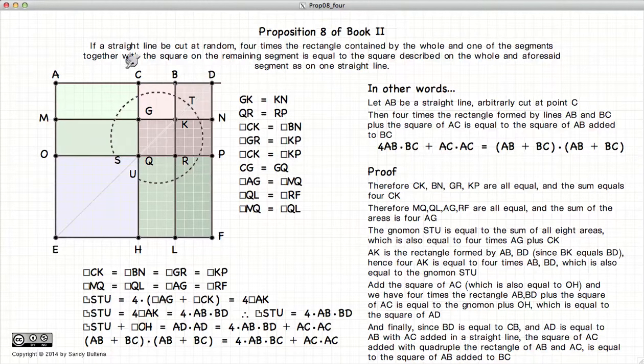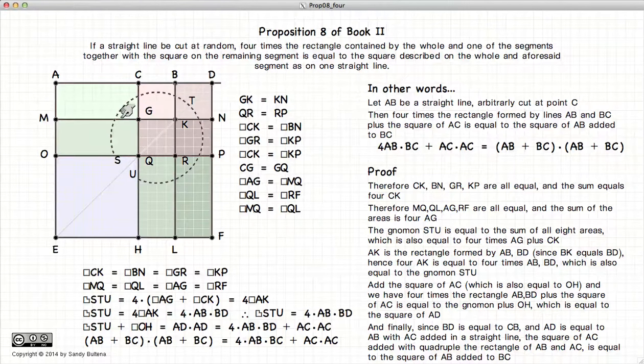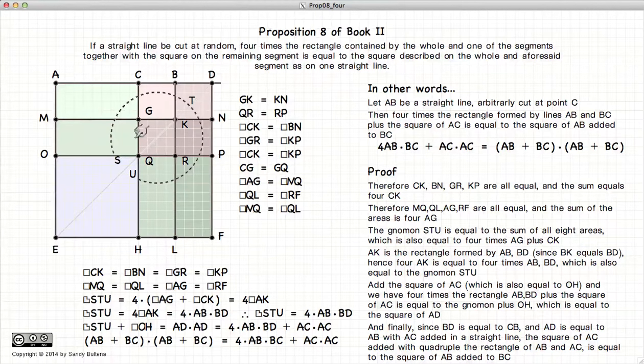But BD is equal to CB. AD all squared is equal to AB plus BC all squared. So we now have AB plus BC all squared, which is this big, large square, is equal to four times AC times BD. Sorry, AB times BD. That would be this here. Four times this, plus AC squared. So if we look at this a little more carefully, four times this green plus this purple, that purple, anyway. Four times this area here ends up being all of this, plus this little purple area is equal to AD all squared, or AB plus BC all squared. A little complicated, but there it is.